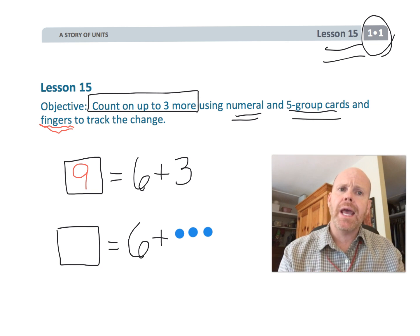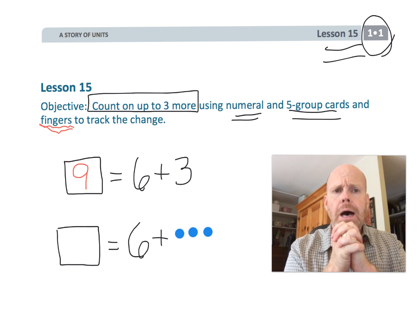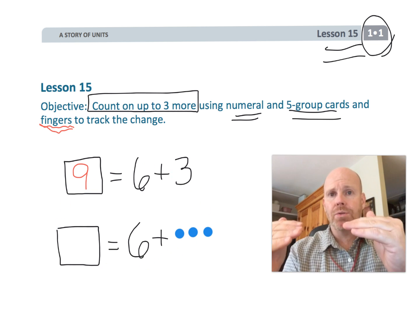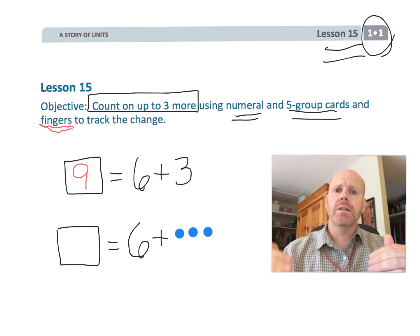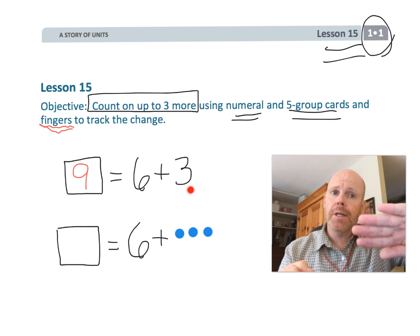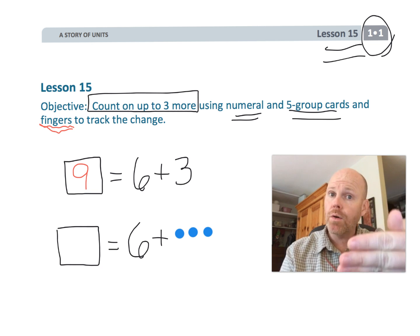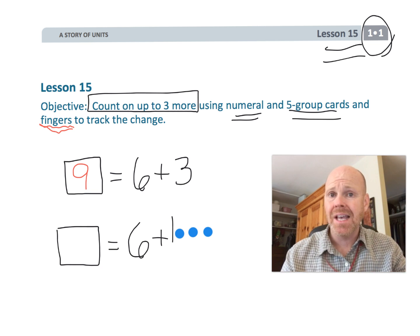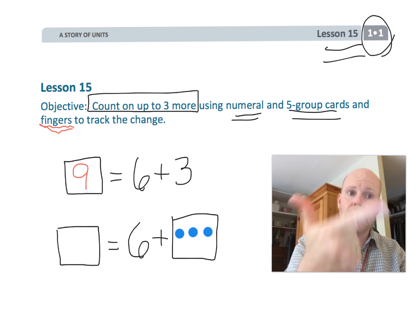Alternatively, what we can have is students take a look at the numbers over here on my left. We could take that six plus three, which is of course numbers, and leaving the six alone, that's our starting point. We can flip our five group cards, flip the three over to reveal the three dots.